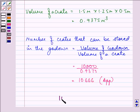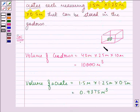The answer is 10666 boxes can be adjusted into the godown or the crates can be adjusted into the godown given these measurements. This completes my question. Hope you understood the concept of the question well and have a good day.